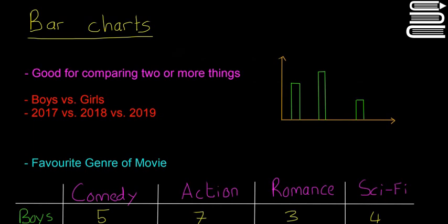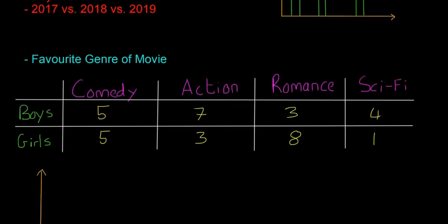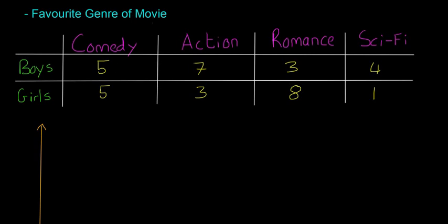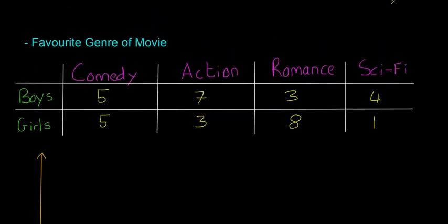We're going to look at a standard example of how to draw a bar chart. People were asked about their favorite genre of movie. Five boys said comedy, seven said action, three said romance, and four said sci-fi. For the girls, five said comedy, three said action, eight said romance, and one said sci-fi.